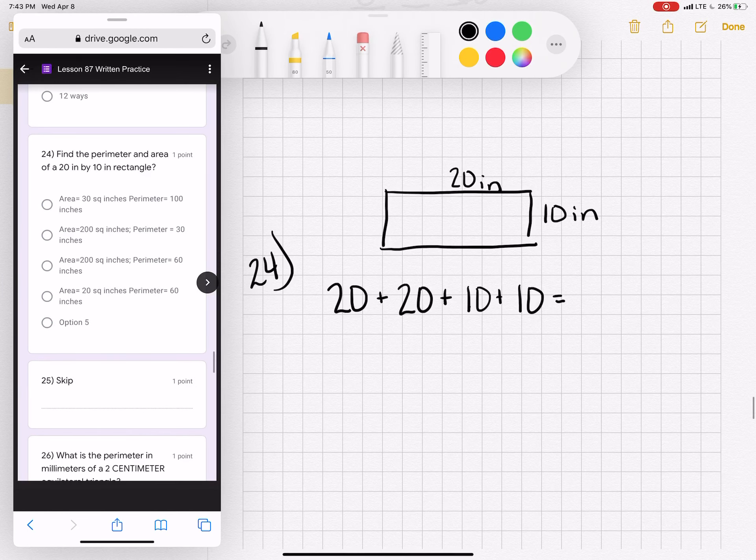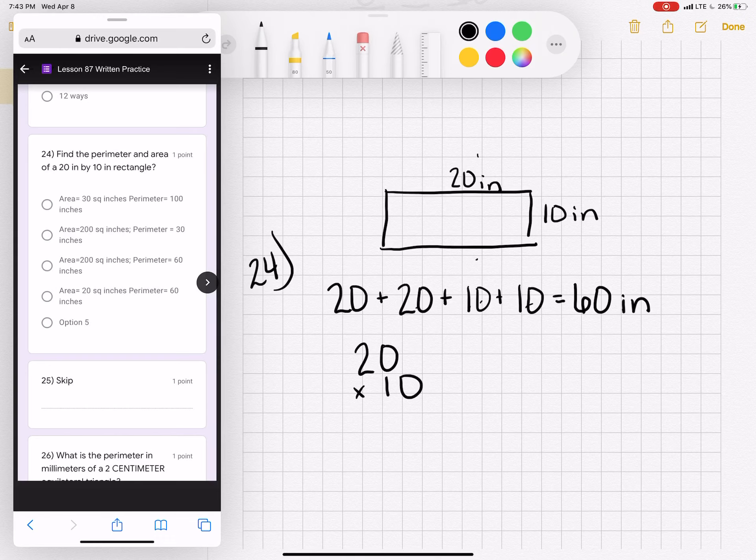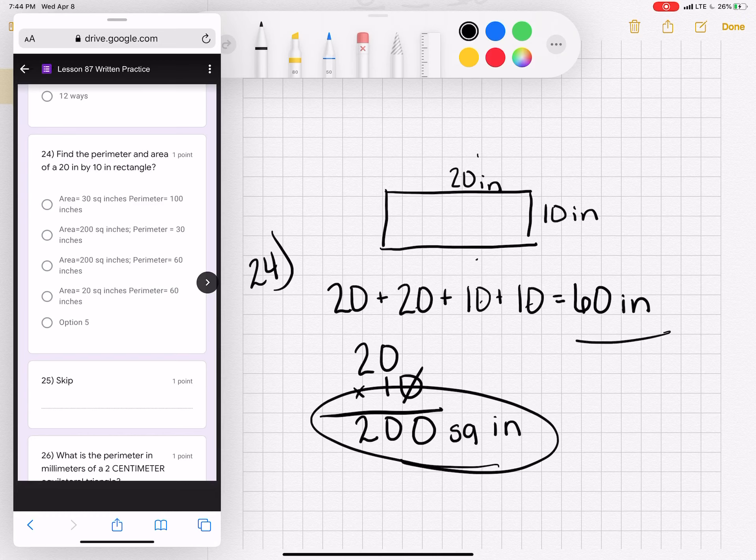Twenty-four. Find the perimeter and area of a 20 by 10 rectangle. The perimeter, you would add both sides of 20, both sides of 10. Twenty plus 20 is 40. Plus 10 is 50. Plus 10 is 60 inches. Area is multiplication, 20 times 10. I'm going to let the zero hang off the end, put it in my answer. Zero times one is zero. Two times one is two. The area is 200 square inches. So find the answer that shows an area of 200 and a perimeter of 60.